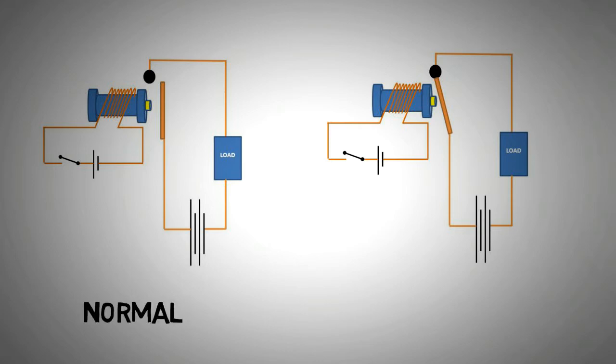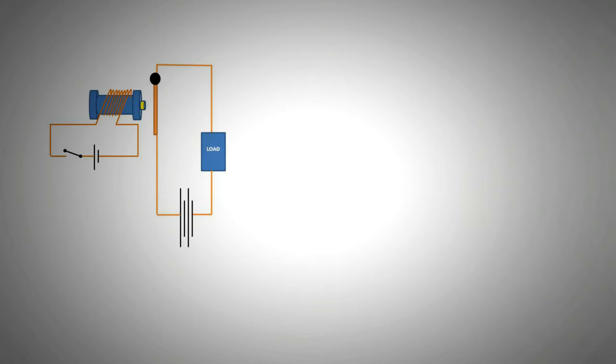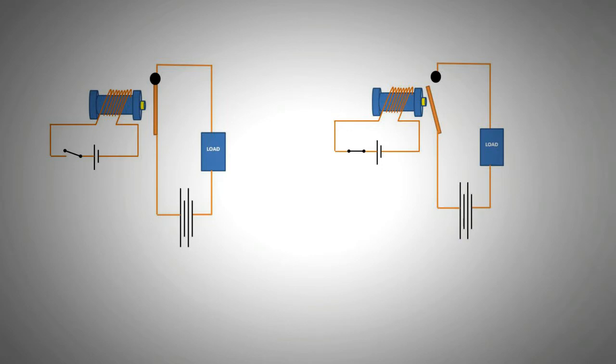Now this type of relay configuration is called a NO relay configuration or normally open relay. When the electromagnet switches on, the main circuit is completed. You can also have an NC configuration which does the opposite. NC is normally closed. That is when the electromagnet switches on, it breaks the main circuit.